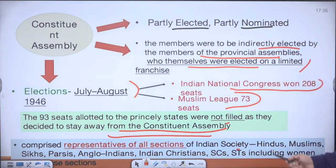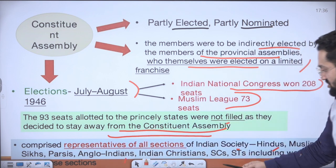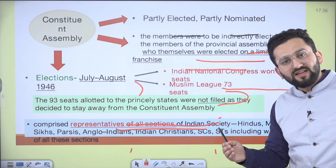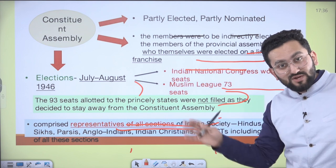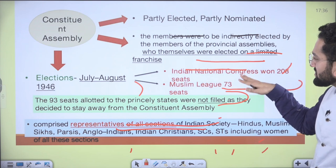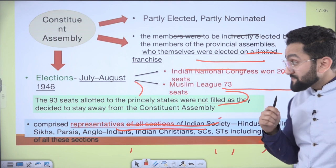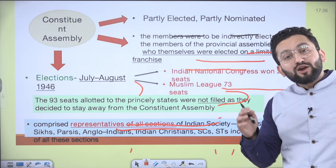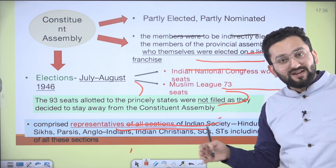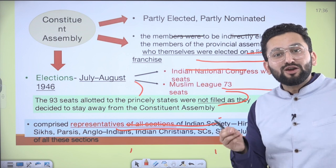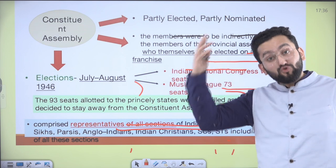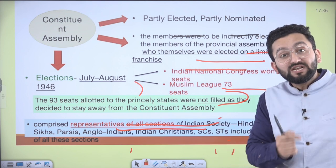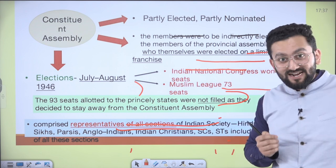The Constituent Assembly comprised representatives of all sections of Indian society — Hindus, Muslims, Sikhs, Parsis, Anglo-Indians, Indian Christians, SCs, STs, including women. So the Constituent Assembly was truly representative in nature. Some might think that since Congress had 208 seats, they could mold the constitution however they wished. But the framers adopted the method of consensus — it was not pure majority-based. This decision was taken by the foresight of our constitution framers, because if majority voting was the basis, it could raise questions on the constitution's legitimacy in the future.